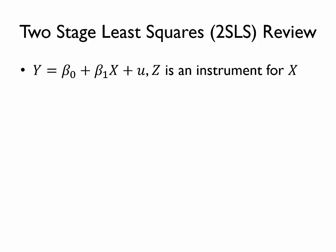As a brief review of two-stage least squares introduced in another video: suppose that we would like to find the causal effect of x on y, but we have a concern that our independent variable x is endogenous. That will make the OLS estimate of beta1 biased, and so we would like to find an instrument z for x.